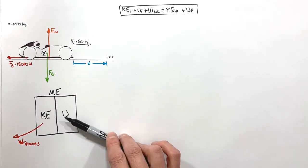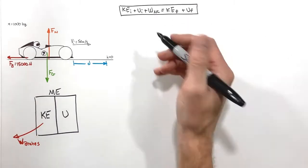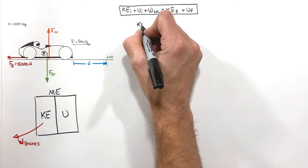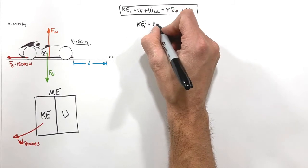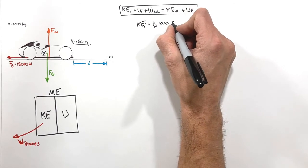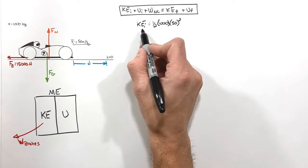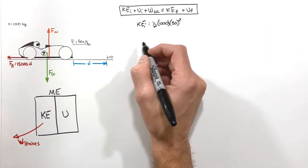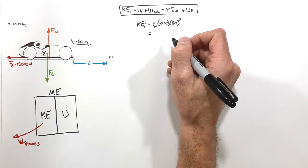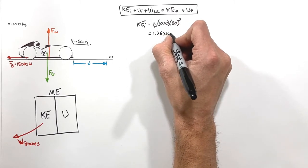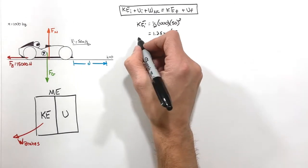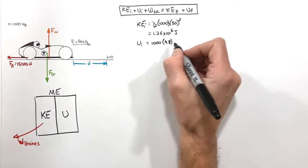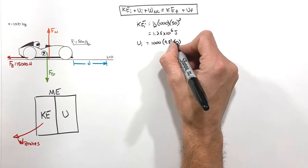Let's fill out the work-energy theorem like a form, going through each of the five variables one at a time. The initial kinetic energy is one-half times mass (1,000 kg) times initial velocity squared, which works out to 1.25 × 10⁶ joules. The initial potential energy is mass times 9.8 times a height of zero, which conveniently works out to zero.